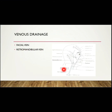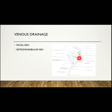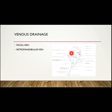Next we move on to venous drainage, which is via the facial vein and retromandibular vein. The facial vein is the principal vein of the face. It is formed by the union of the supratrochlear and supraorbital veins at the medial angle of the eye, and runs downwards and backwards to unite at the lower border of the mandible with the anterior division of the retromandibular vein, finally draining into the internal jugular vein.